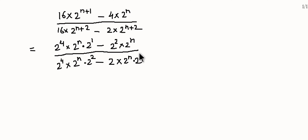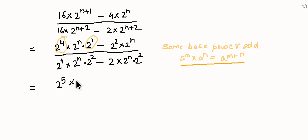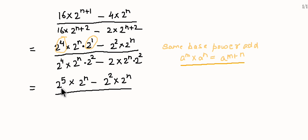Base same होता है तो power add होती है — तो उसको हम multiply कर सकते हैं। यहां पर same base है, power different है, तो power को हम add कर सकते हैं। तो 2 to the power 4 और 2 to the power 1, base same है 2, तो power add हो जाएगी — 2 to the power 5 multiply 2 to the power n, minus 2 to the power 3 multiply 2 to the power n.